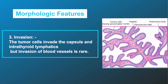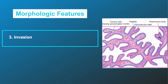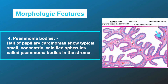Third, invasion: the tumor cells invade the capsule and intrathyroid lymphatics, but invasion of blood vessels is rare. Fourth, psammoma bodies: half of papillary carcinomas show typical small concentric calcified spherules called psammoma bodies in the stroma.